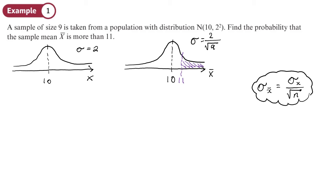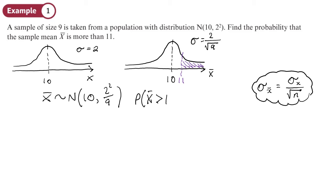We can use our calculator: menu 7 and 2, normal CD. Lower value of 11, upper value of any large number. Standard deviation is 2 divided by the square root of 9, which is 2 over 3, and a mean of 10. So the sample mean is normally distributed with mean 10 and variance 4 over 9. The probability that the sample mean is greater than 11 is 0.0668 to 4 decimal places.